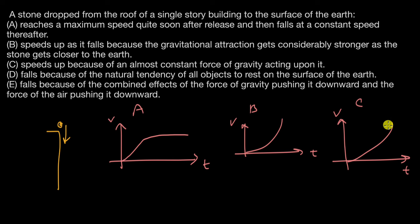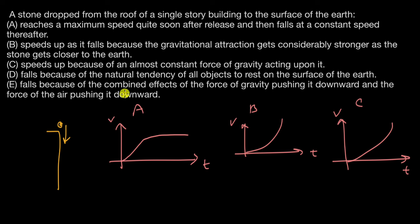Option D says it falls because of the natural tendency of all objects to rest on the surface of the earth. Option E says it falls because of the combined effects of the force of gravity pushing it downward and the force of air pushing it downward.